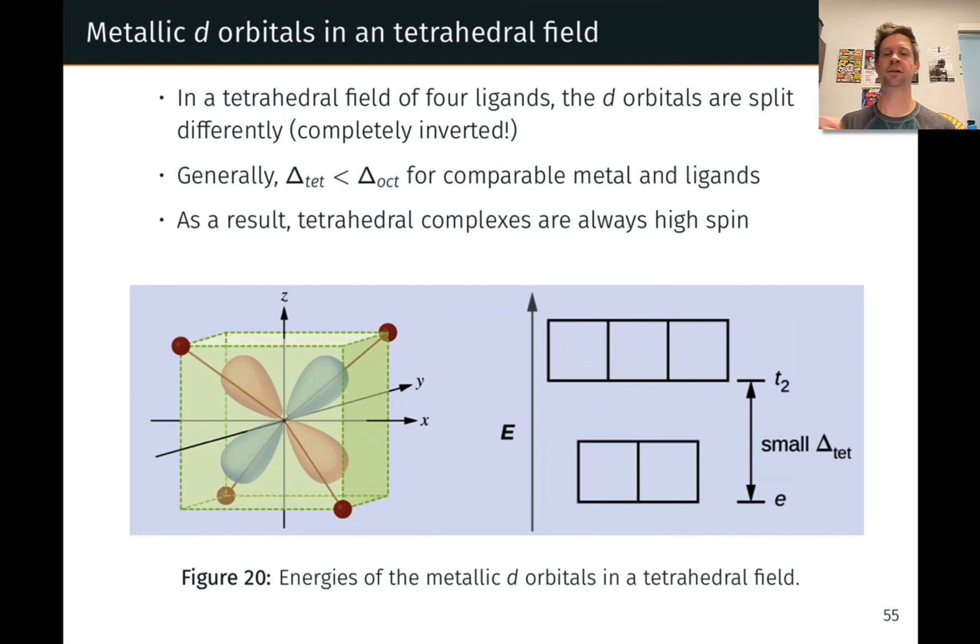And in a tetrahedral field, the d-orbitals are split into three higher energy orbitals called t₂ and two lower energy orbitals called e.